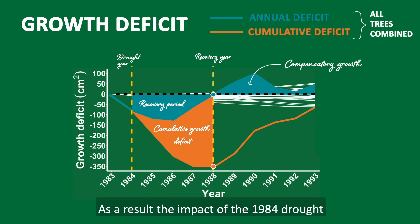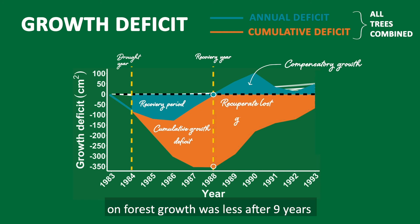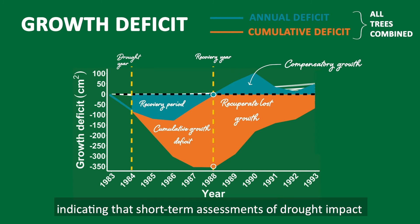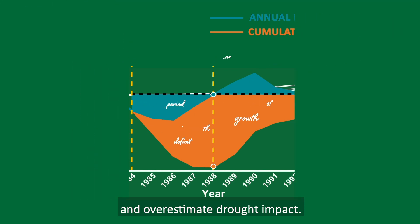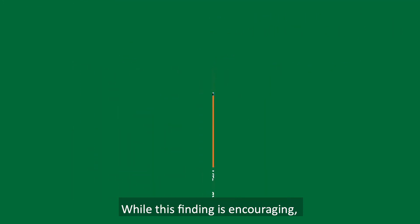As a result, the impact of the 1984 drought on forest growth was less after nine years than it was after four years, indicating that the short-term assessment of drought impact could underestimate forest resilience and overestimate drought impact.